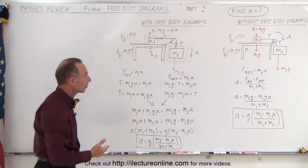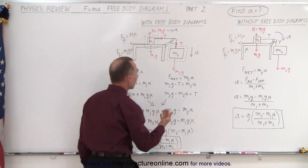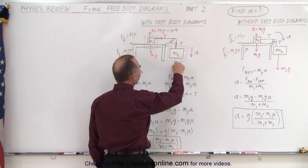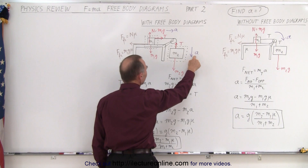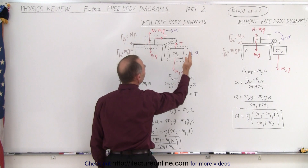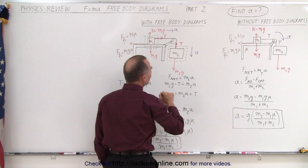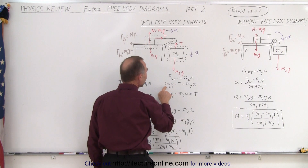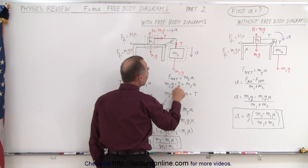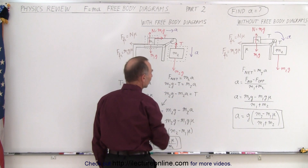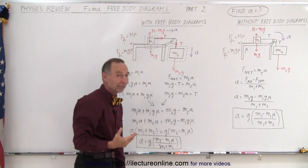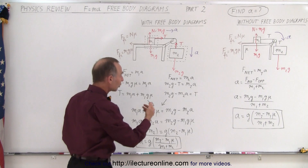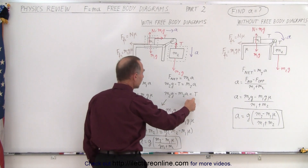We do the same thing on the second free body diagram. Notice that M2g is in the same direction as acceleration, and the tension is in the opposite direction. So we have the aiding force minus the opposing force equals M2 times acceleration. We solve that equation for T as well.